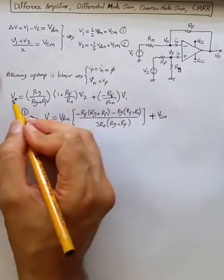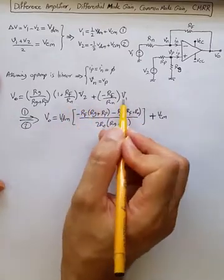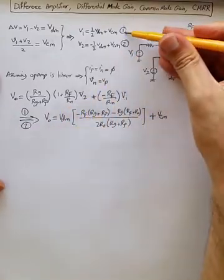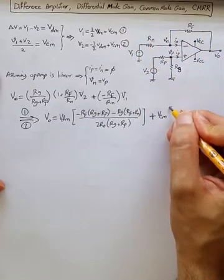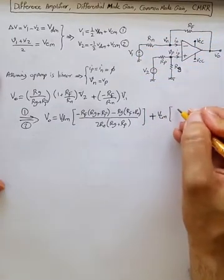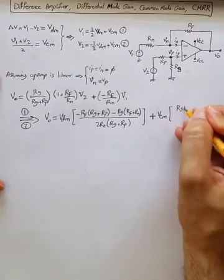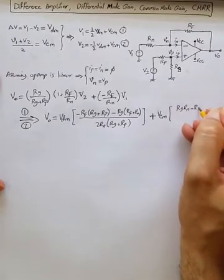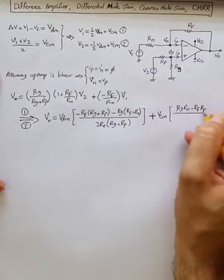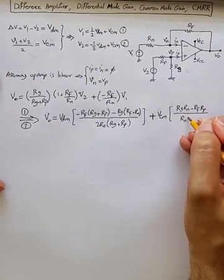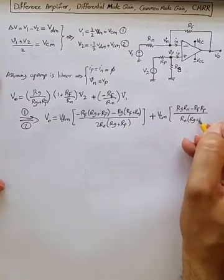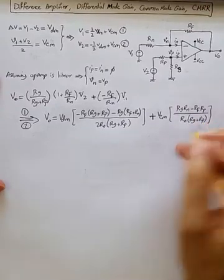What we did was, just in this equation, replacing V1 and V2 with the values from equations 1 and 2, getting Rg times Rf plus Rn divided by Rg plus Rp times Rg plus Rp.